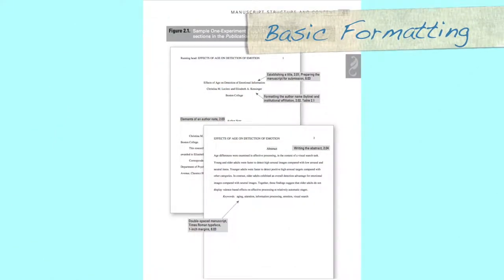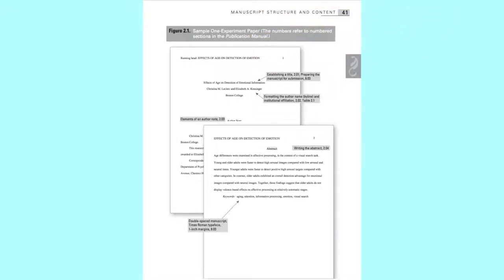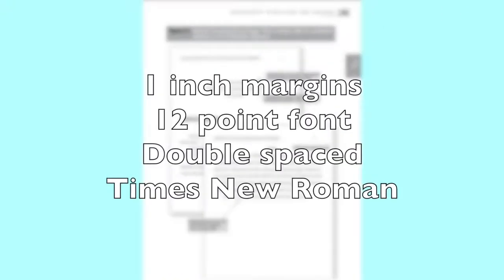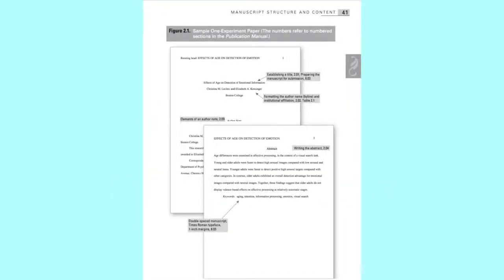Let's begin by discussing the basic formatting rules of APA. You'll want to use a one-inch margin around the edge of your paper, 12-point font, double spacing throughout the document, and generally you'll use Times New Roman, unless your instructor specifies otherwise.